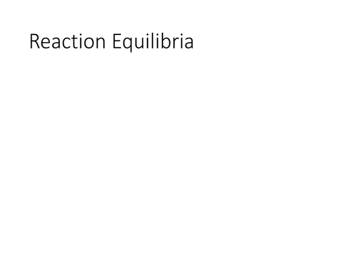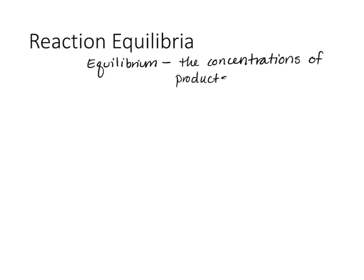So what does it mean to be at equilibrium? At equilibrium, the concentrations of the products and the reactants are constant. This doesn't mean that the concentrations of the reactants and products are equal — that can happen — but equilibrium means that the concentrations of the products and the reactants are not changing; they're just staying the same.